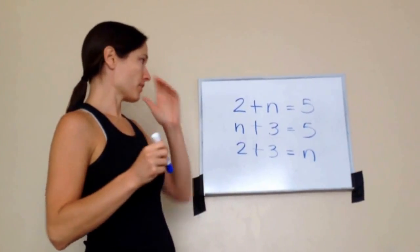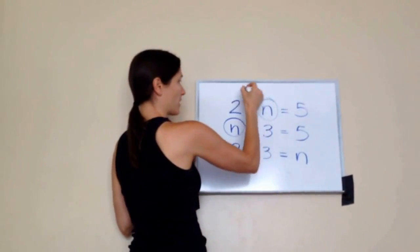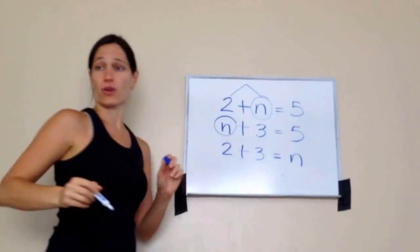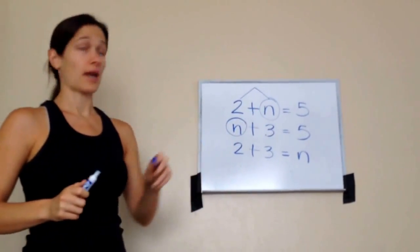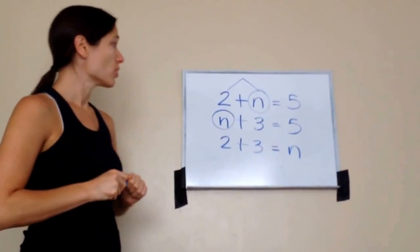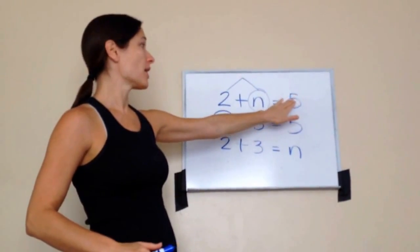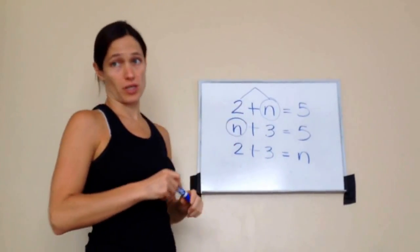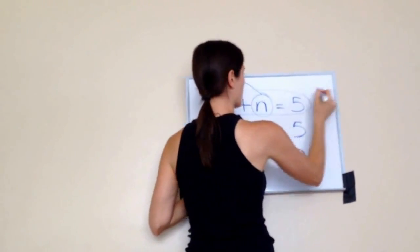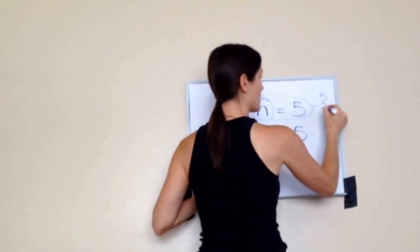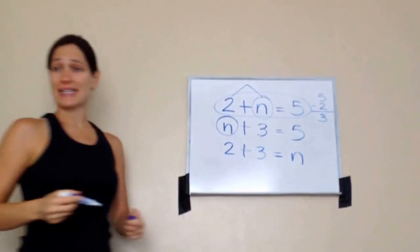Whenever you have a missing add-in — remember, these two numbers are called add-ins — what you're going to do is always take your highest number and subtract the lowest number from it. For example, in this problem, highest minus lowest gives us 3. So N equals 3.